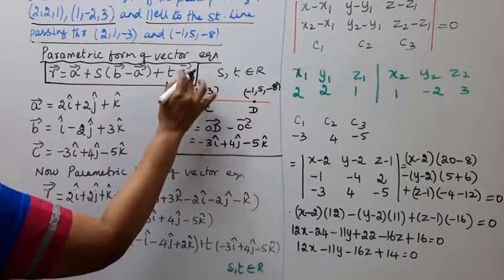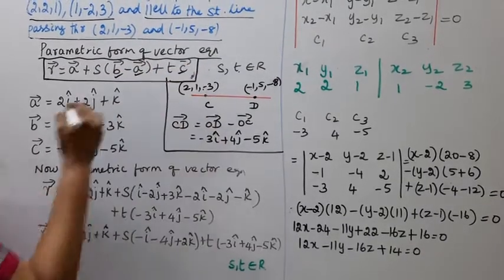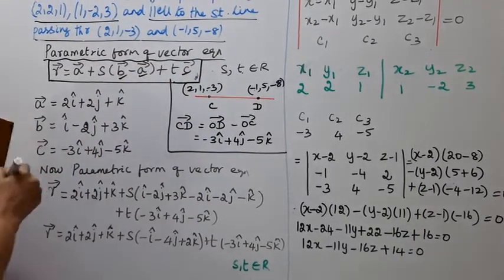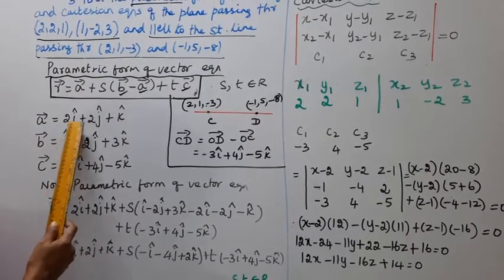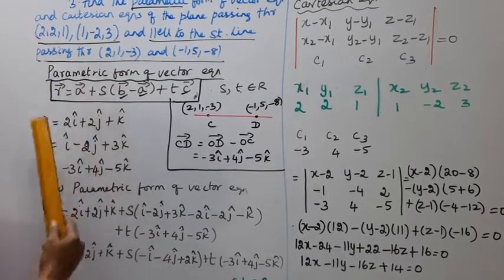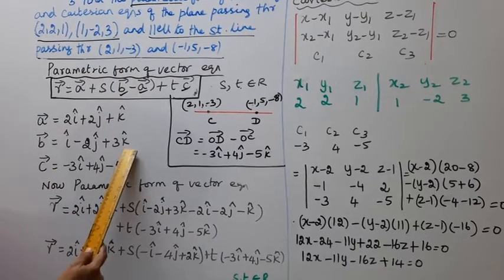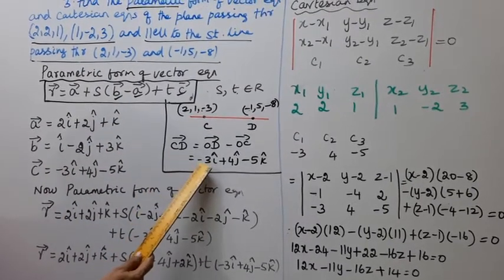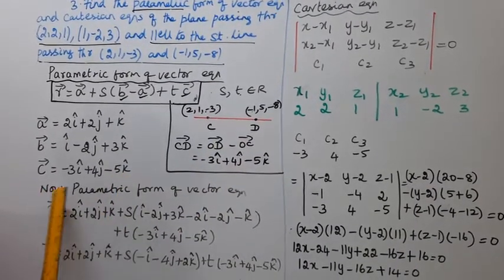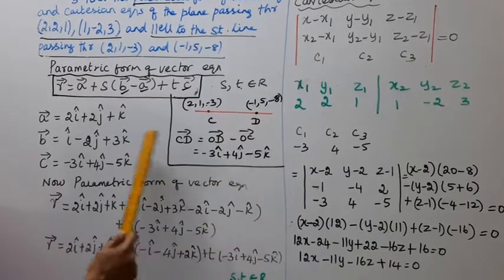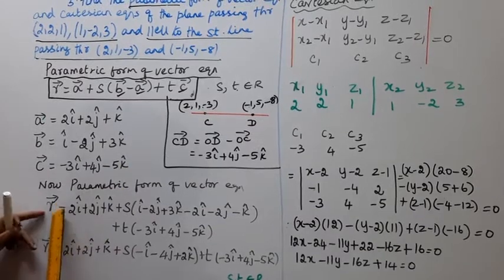Here a vector equals 2i cap plus 2j cap plus k cap, b vector equals i cap minus 2j cap plus 3k cap, and c vector equals the CD vector which is minus 3i cap plus 4j cap minus 5k cap. We substitute these into the parametric form.